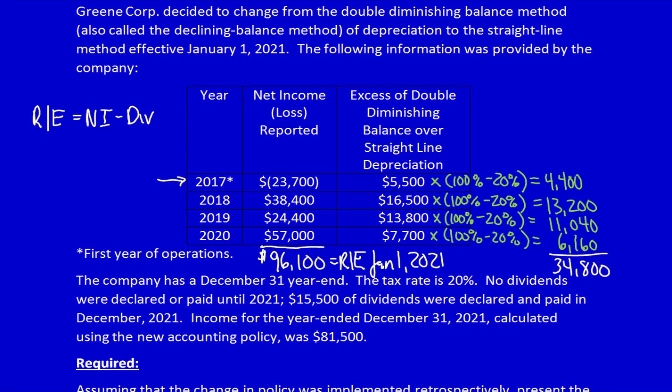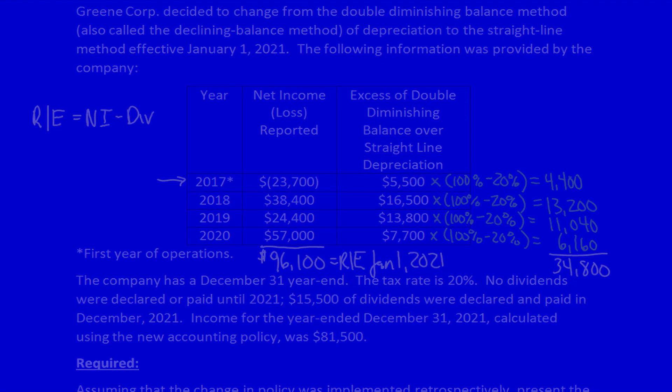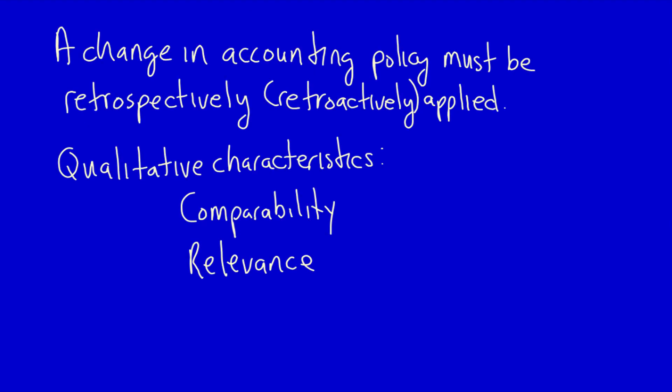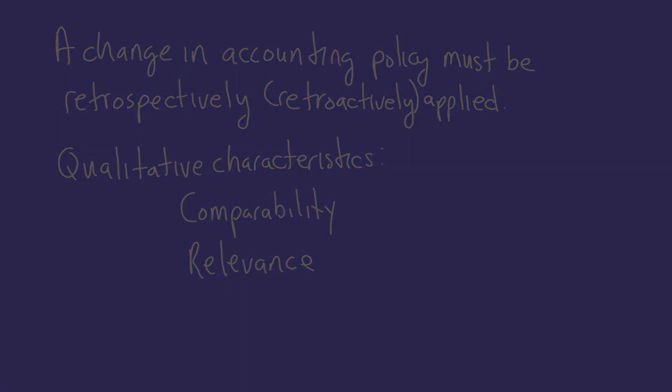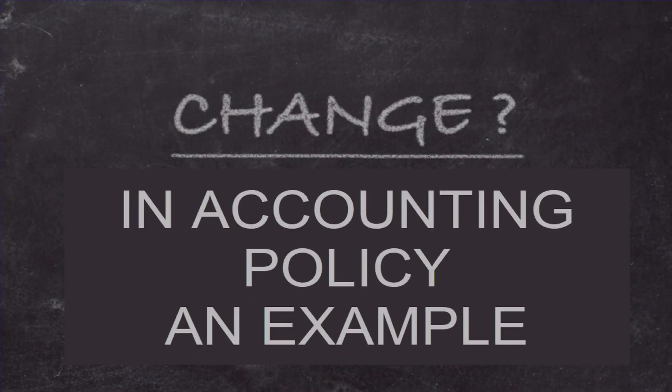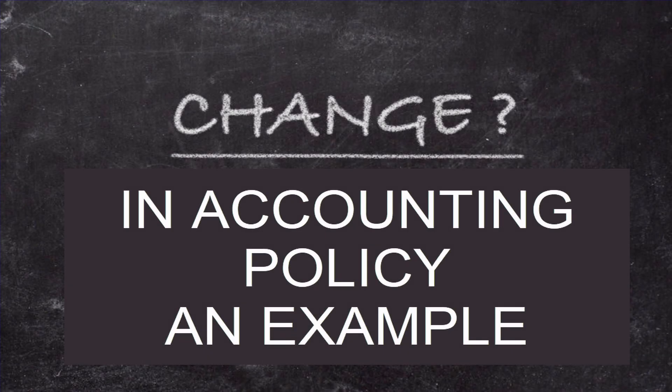What have we learned? Whenever there is a change in accounting policy, we need to retrospectively change all prior period financial statements. This is required in order to comply with the conceptual framework's qualitative characteristics — both comparability and relevance. This is the key principle governing any change in accounting policy.